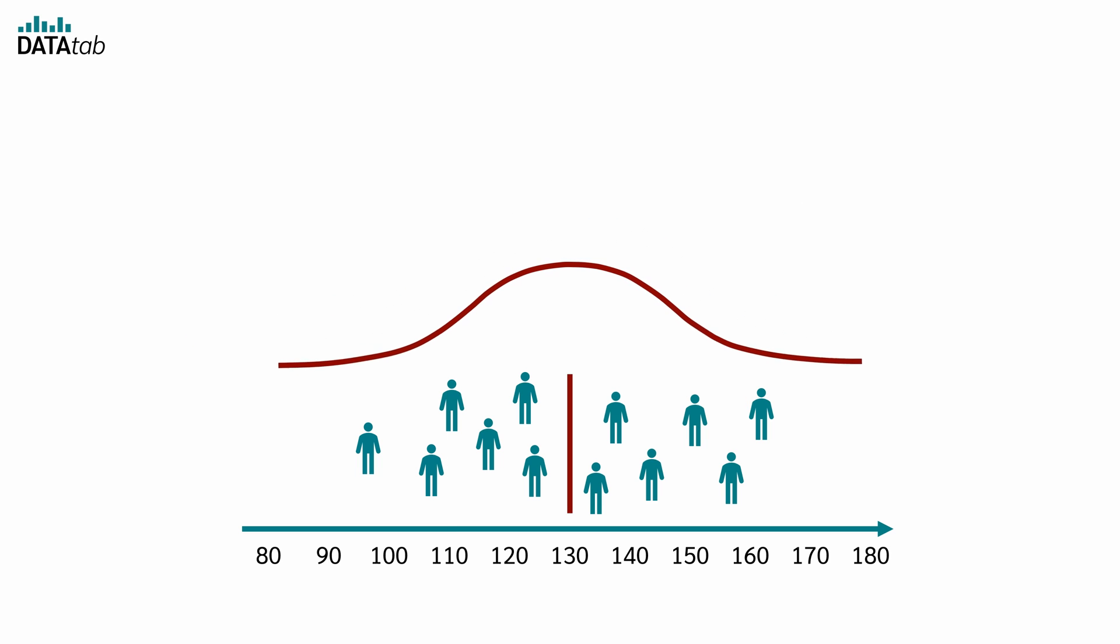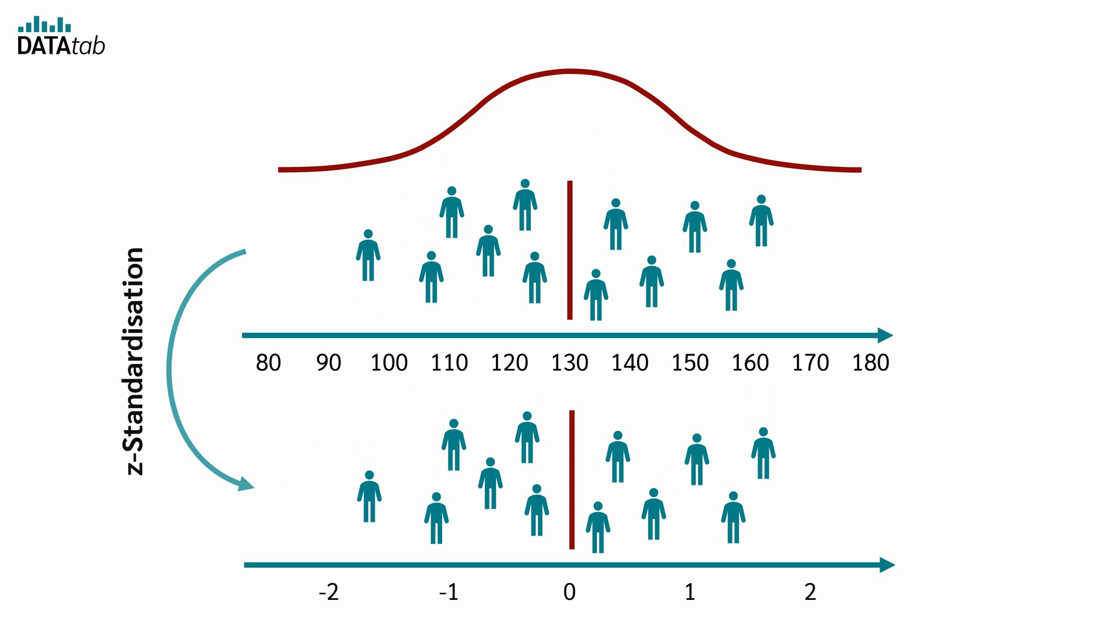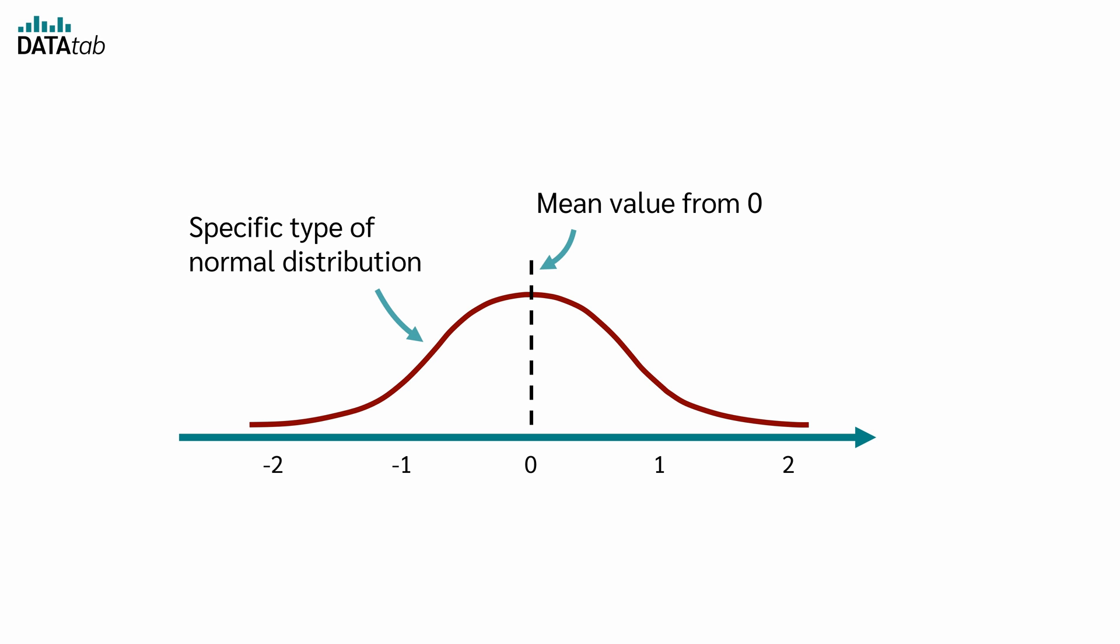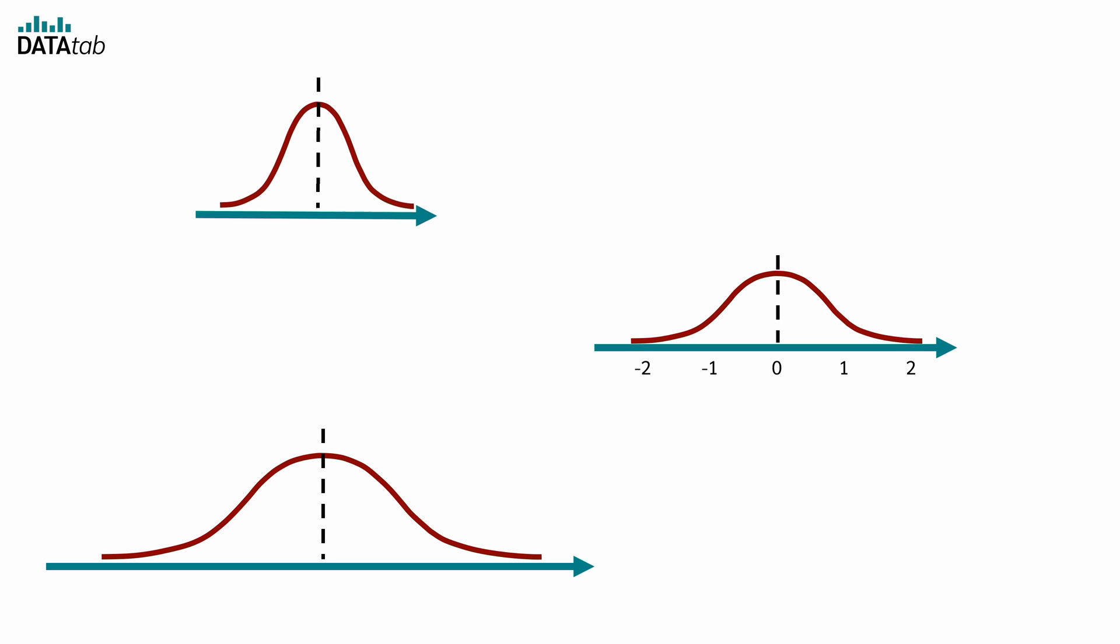If the initial data are normally distributed, then we obtain a so-called standard normal distribution through z-standardization. The standard normal distribution is a special type of normal distribution that has a mean value of 0 and a standard deviation of 1. The special feature is that any normal distribution, regardless of its mean or standard deviation, can be converted into a standard normal distribution.